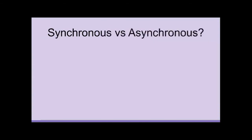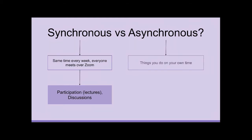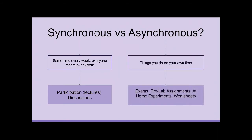Some different words you may hear commonly in an online course are synchronous versus asynchronous. A synchronous course is when the group members meet at the same time every week. We will be meeting over Zoom and we use discussions as the synchronous portion of the lab. You also have participation points through the lectures. The asynchronous portion includes things you do on your own time — exams, pre-labs, at-home experiments, and worksheets.